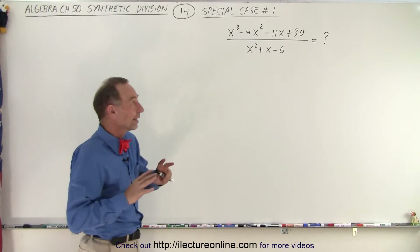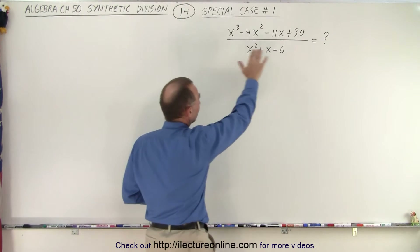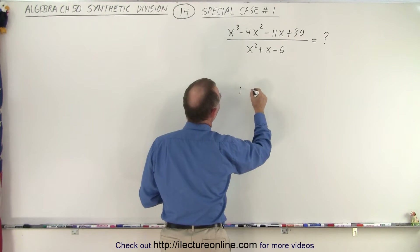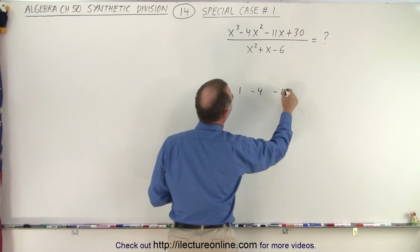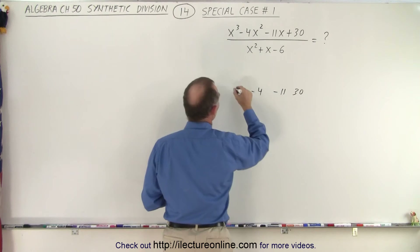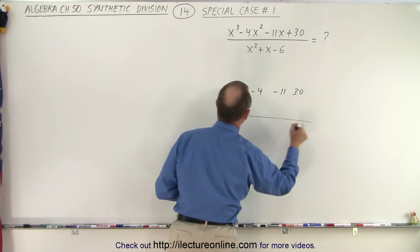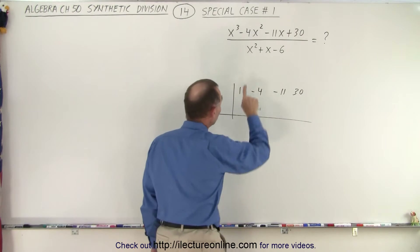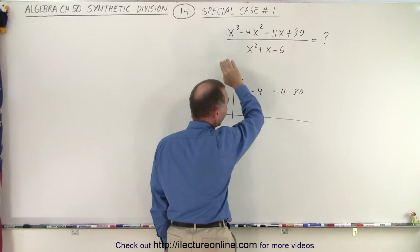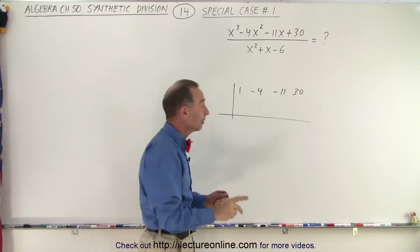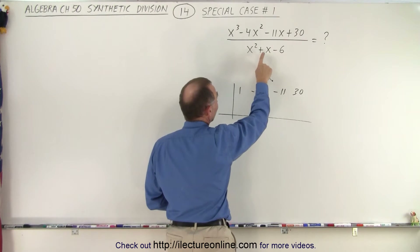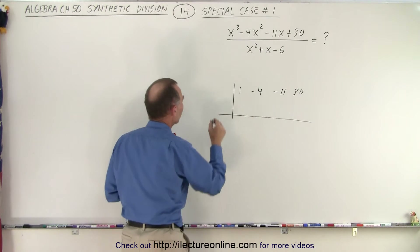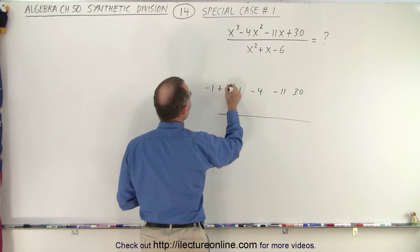Everything else starts out exactly the same. We take the numerator, we take the coefficients of the numerator, and we write them down. So we have 1, minus 4, minus 11, and 30. We draw the line here, we draw the line there. Now what do we put on the left side? We're going to put two numbers. We do want a 1x squared in the front. Here we have a plus 1 and a negative 6. Remember, we always change the signs, so we end up with a negative 1 and plus 6.